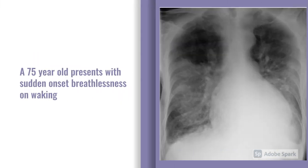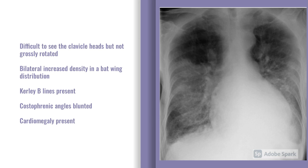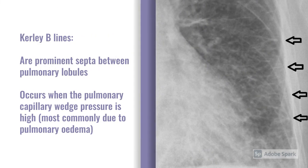Next: a 75-year-old who presents with sudden onset breathlessness after waking up. It's difficult to see the clavicle heads and the vertebrae through the heart, so exposure isn't ideal. Airways: the trachea is nice and central. Breathing-wise, there's increased density in the mid and lower zones in what we would describe as a bat-wing distribution, and there are some curly B lines present. The costophrenic angles are both blunted. On C, there's cardiomegaly — the heart appears large and bulky. The diagnosis is pulmonary oedema. Curly B lines are prominent markings between the pulmonary lobules — the alveoli, ducts, and sacs — present when you have a high capillary wedge pressure, commonly seen in pulmonary oedema.